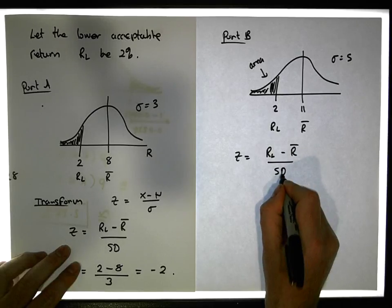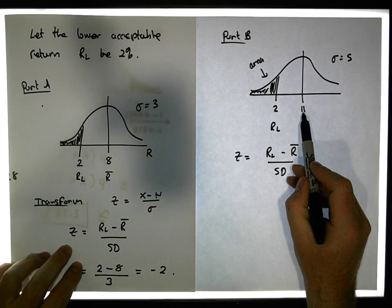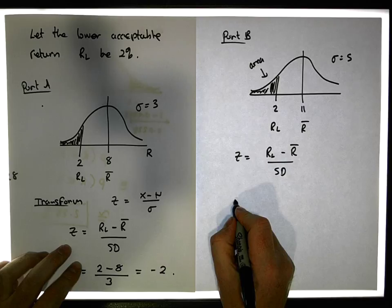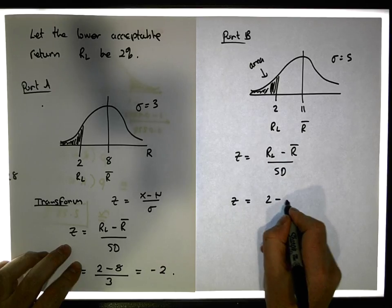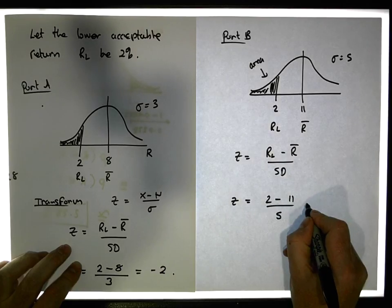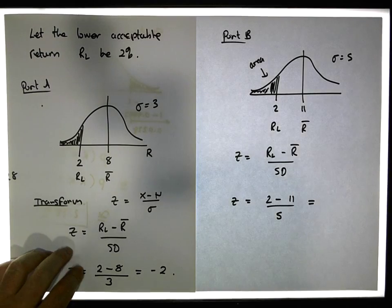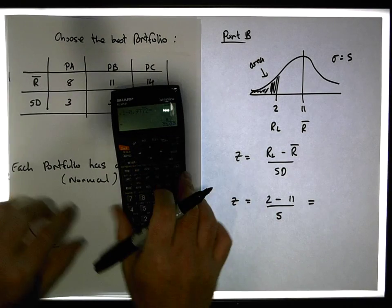For portfolio B divided by standard deviation, 11 is going to go to zero. Where does 2 go? Z is equal to 2 minus 11 all over 5, which is the standard deviation for this portfolio B. So if we have a look at this, what we end up with...